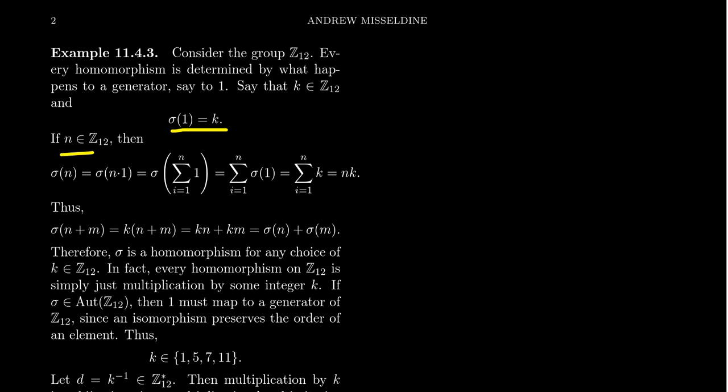If you take any other element n in Z12, what's sigma(n)? Well, n is just 1 added together n times — that's what n·1 means here. We're not necessarily talking about ring multiplication; we're saying n times 1 is just 1 added together n times. Of course, because of the distributive property in Z12 viewed as a ring, these two notions are equivalent, but we can describe it from a purely group-theoretic point of view.